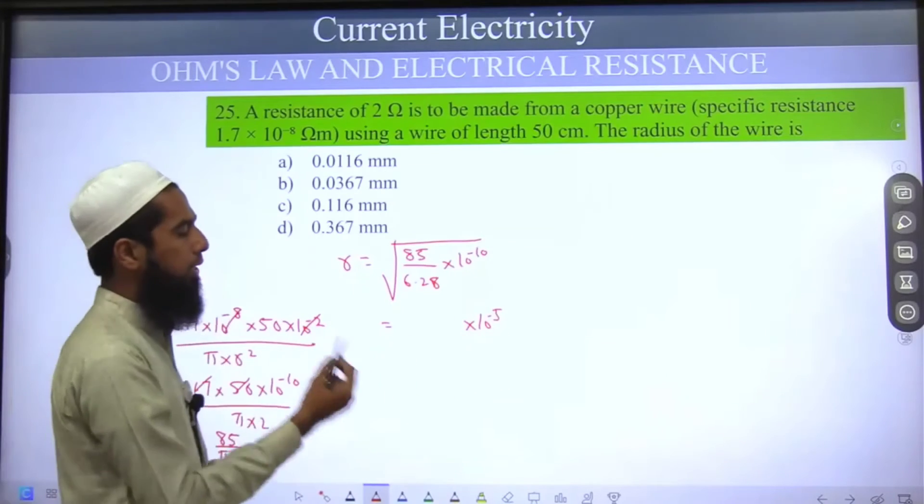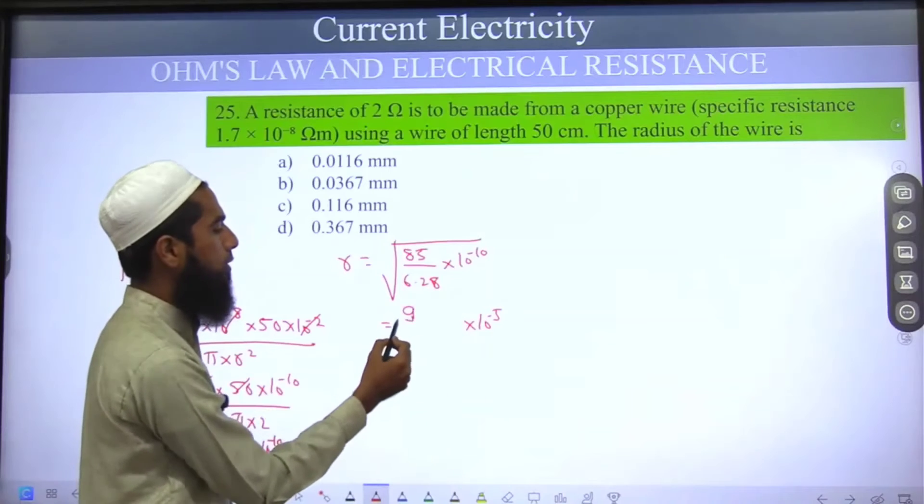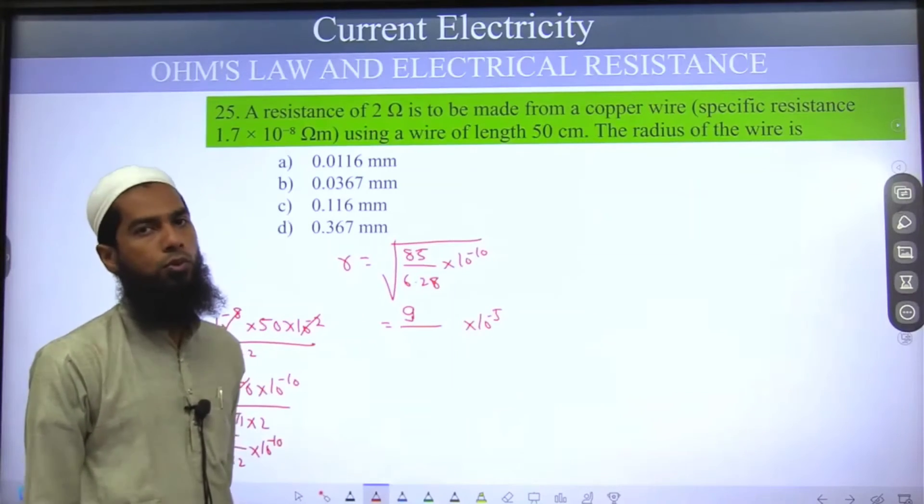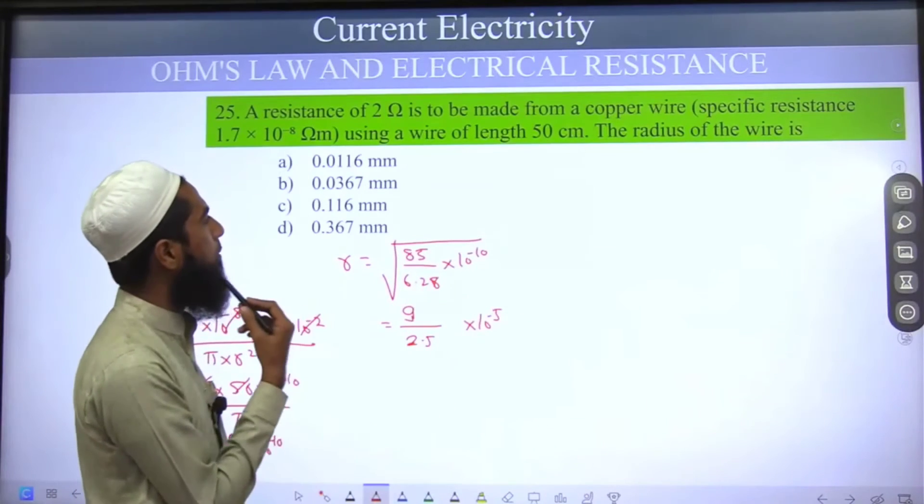Taking 85, we get 9 times 9 equals 81, so it becomes 9 outside. And 6.25, 6.28, 2 squared is 4, taking this as 2.5, we get 2.5 into 10 power minus 5.